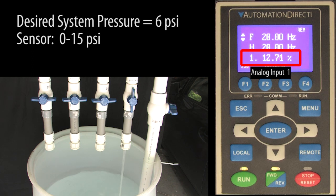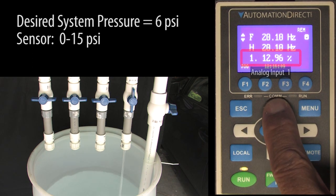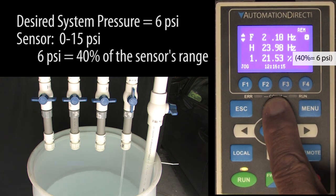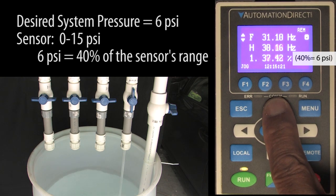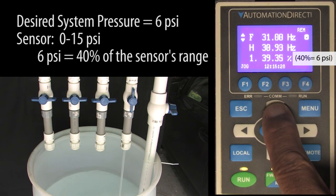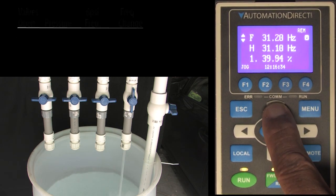The sensor's range is 0 to 15 psi. The 6 psi we want is 40% of that range. So let's increase the drive frequency until we get the 6 psi or 40% we want.